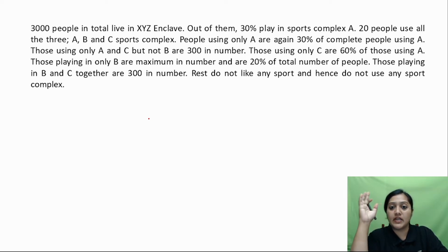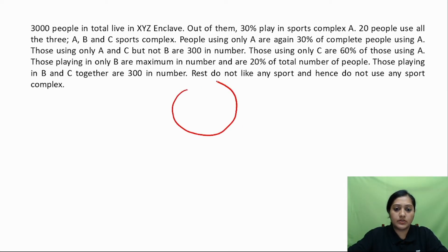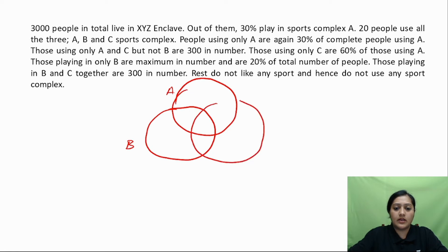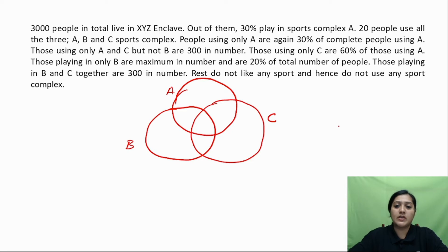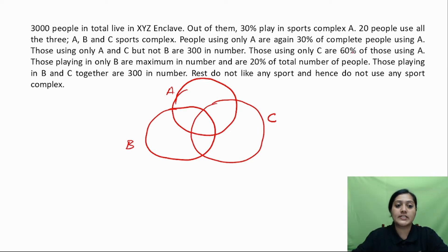The portion in the center represents A and B and C together. Let me start with the question. We are talking about an enclave with sports complexes A, B, and C. People are using different sports complexes. There are 3,000 total people.